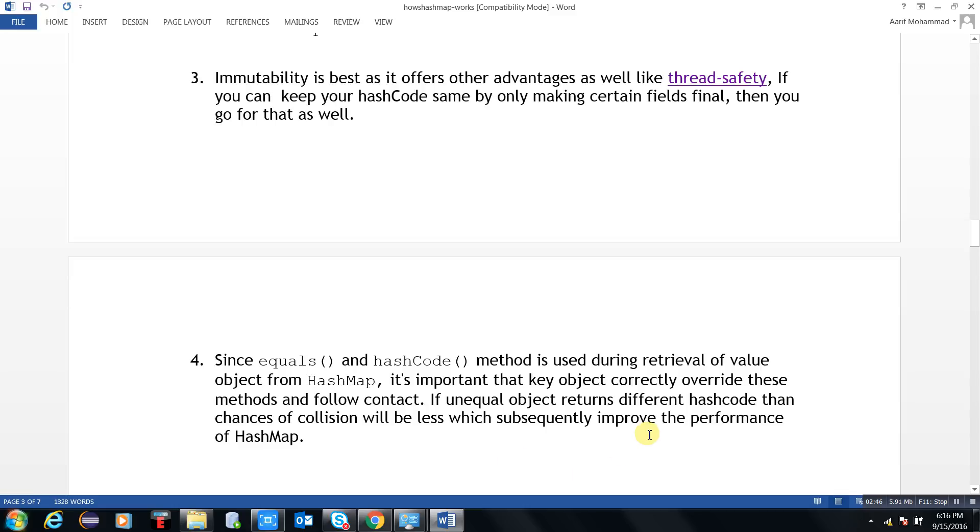Since equals and hashCode methods are used during retrieval of value objects from HashMap, it's important that the key object correctly overrides these methods and follows the contract. If unequal objects return different hashCodes, then the chance of collision will be less, which subsequently improves the performance of the HashMap.